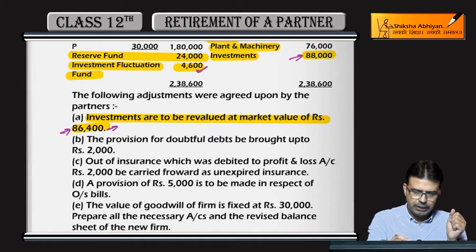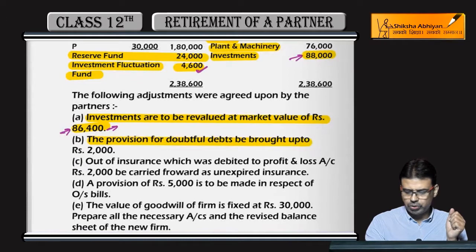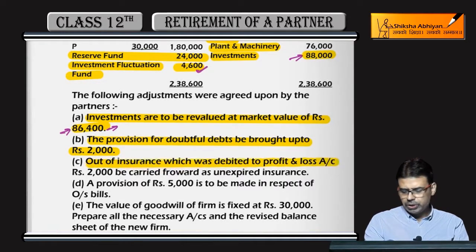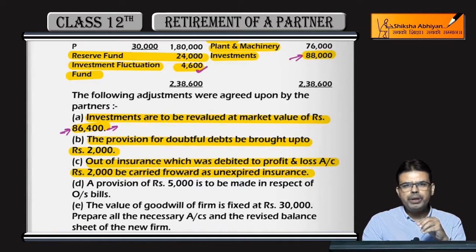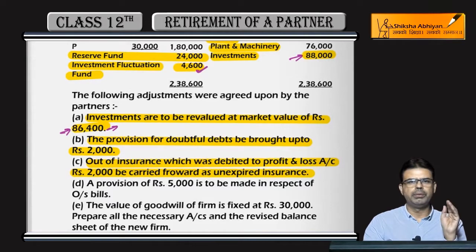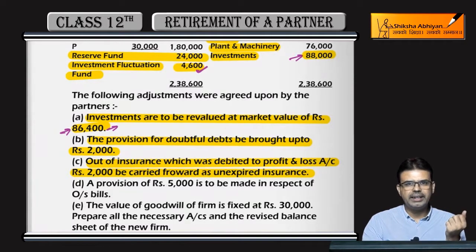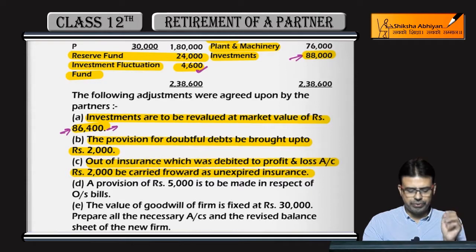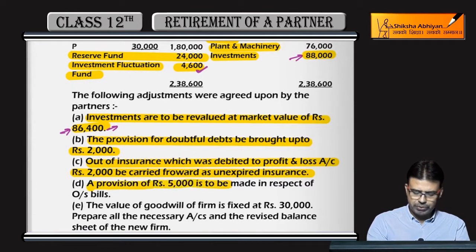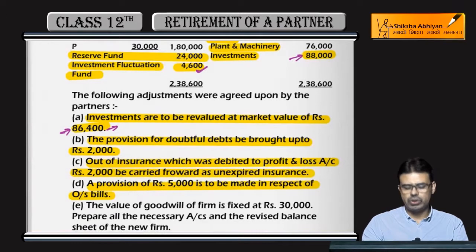Other revaluation items: Provision for doubtful debts — bring it to 2,000. Out of the insurance which was debited to profit and loss account, rupees 2,000 to be carried forward as unexpired (prepaid insurance). That prepaid insurance was mistakenly fully charged to P&L, so now showing it as an asset will be a gain for the firm. Also, create a provision of 5,000 for outstanding bills — that is a loss. And goodwill value of the firm is 30,000.